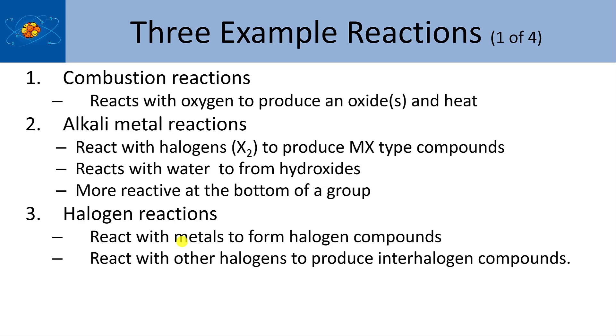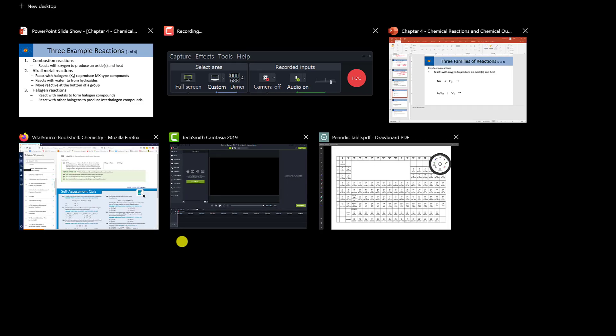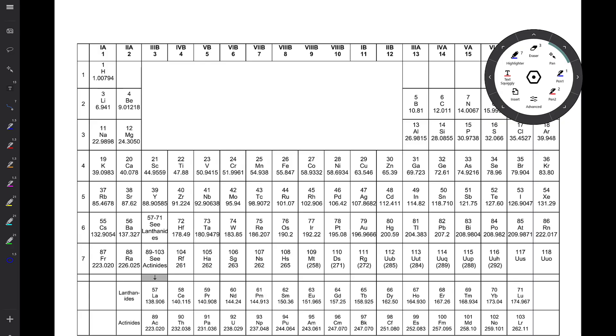Then we'll look at alkali metal reactions. Now the alkali metals are those metals that are found in group one. So we're looking at hydrogen, lithium, sodium, potassium, rubidium, cesium, and francium.